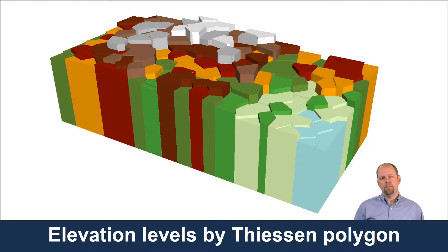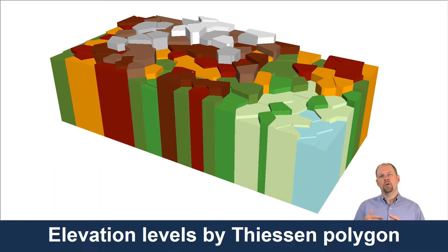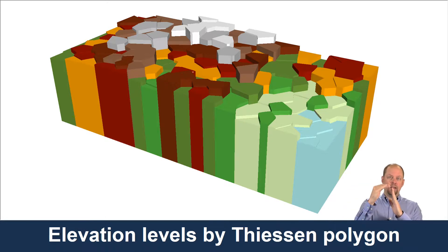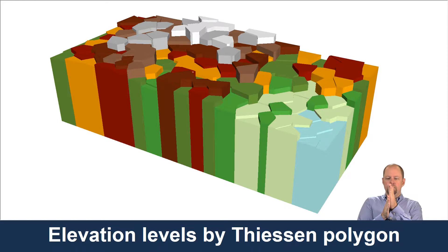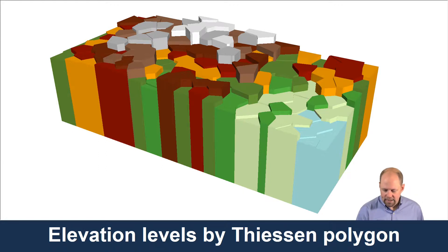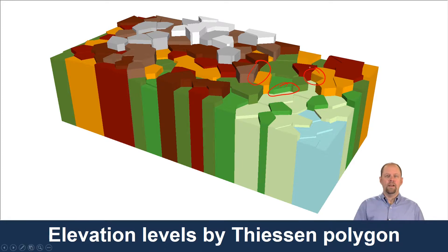I put this into ArcScene to visualize it in 3D, mainly to emphasize that this is not the most realistic interpolation method for elevation. We're getting the idea of a perfectly flat area in our landscape, then a perfectly steep cliff, and then another value — very abrupt changes in values based on this interpolation method. We're getting these little cliff faces, which of course is not really what we'd see in reality.